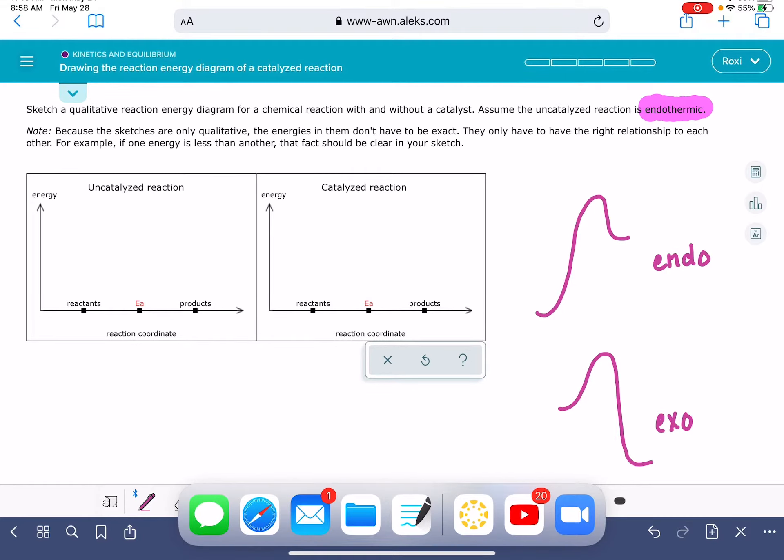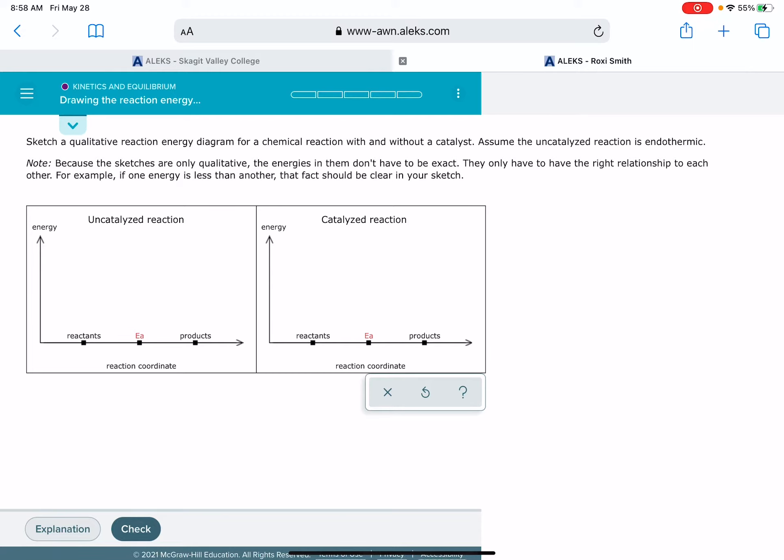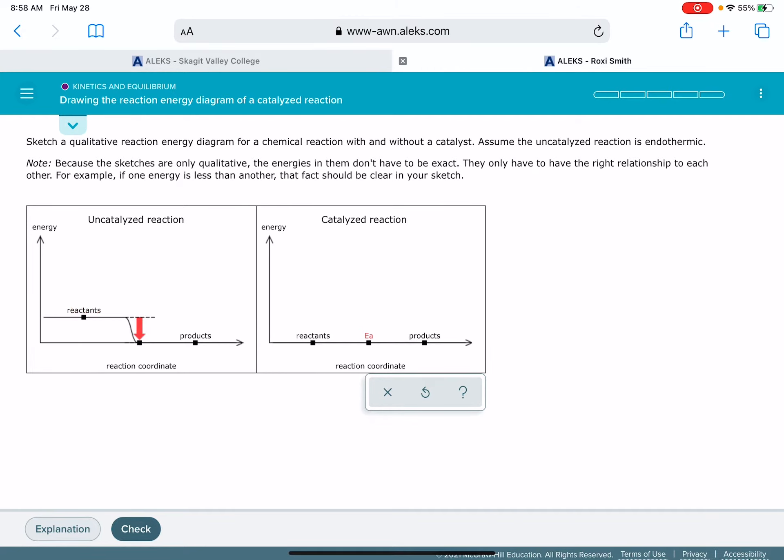Because these two diagrams are going to be for the same reaction, that means that we want our reactants to be at the same energy for both of the diagrams. We've got this little horizontal line that will help you get your reactants lined up with each other in terms of energy. So I don't want it like this. I want my reactants to be the same energy.